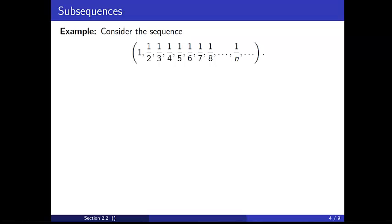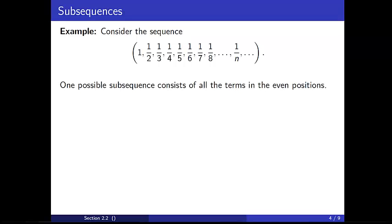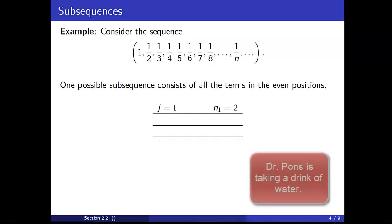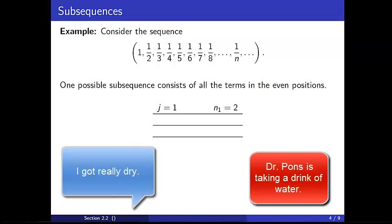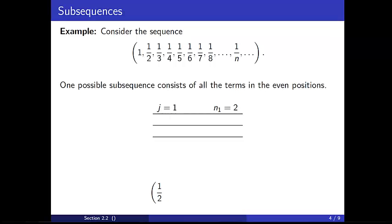Consider the specific sequence 1, 1/2, 1/3, 1/4, and so on. One possible subsequence consists of all the terms in the even positions. For the first term in our subsequence, we take the second term in the original, so we set n_1=2, giving us 1/2 as the first term. For the second term in our subsequence, we want the fourth term in the original, so we set n_2=4, giving us 1/4 as the second term.